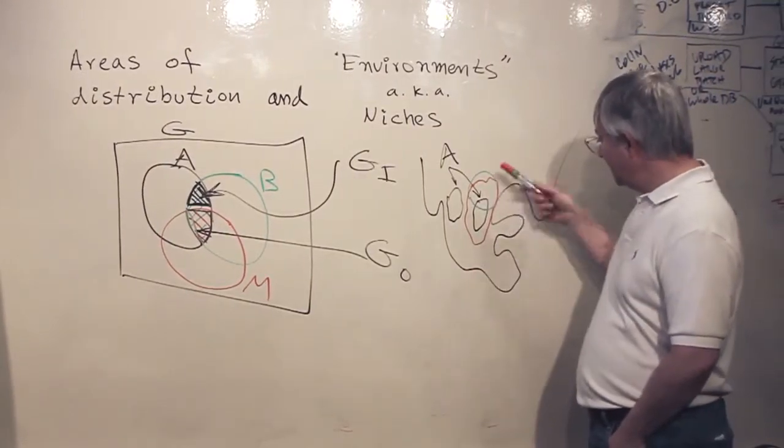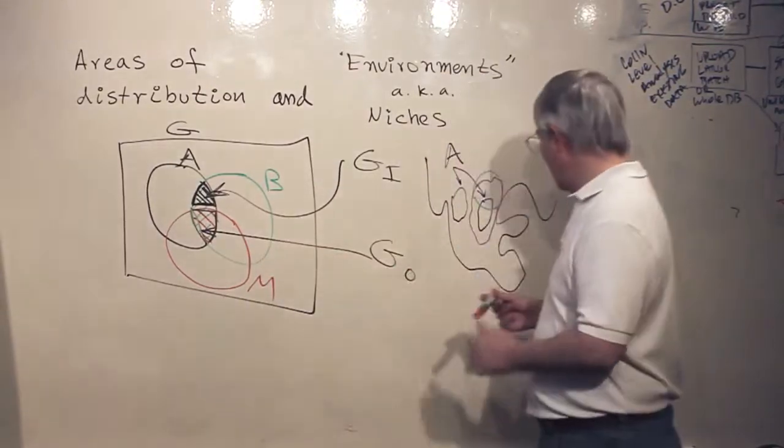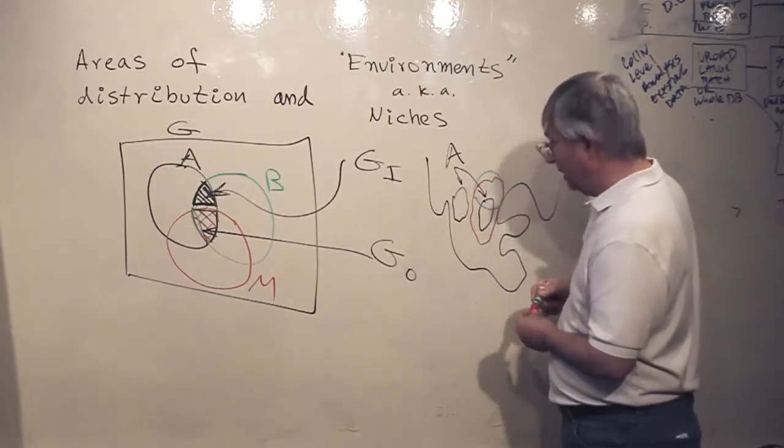Where is the intersection of the three circles? Well, the intersection of the three circles, which is GO, G occupied, is simply this area here.